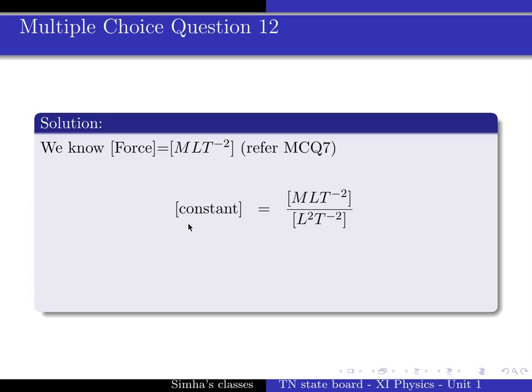So proportionality constant dimension is equal to dimension of F, MLT⁻², divided by dimension of v square, which is L² T⁻². Now, simplify: the dimension of the proportionality constant is equal to ML⁻¹T⁰.